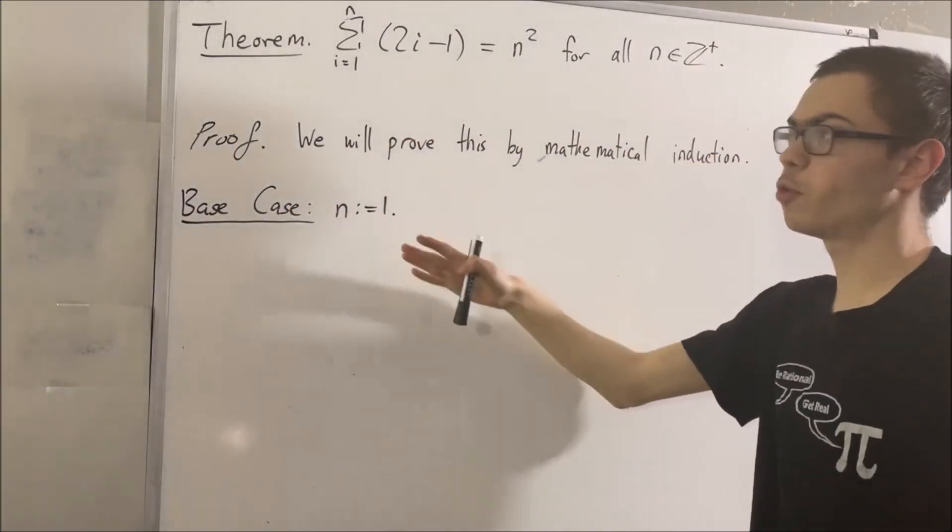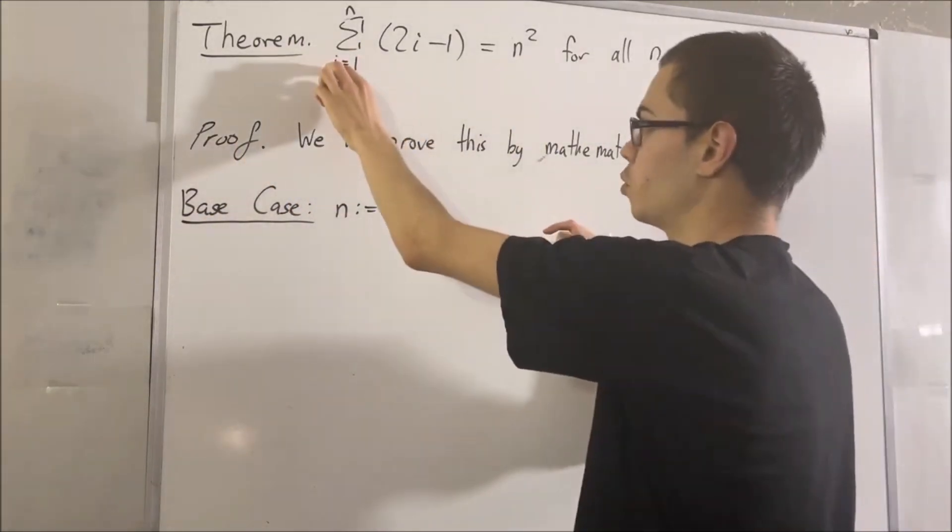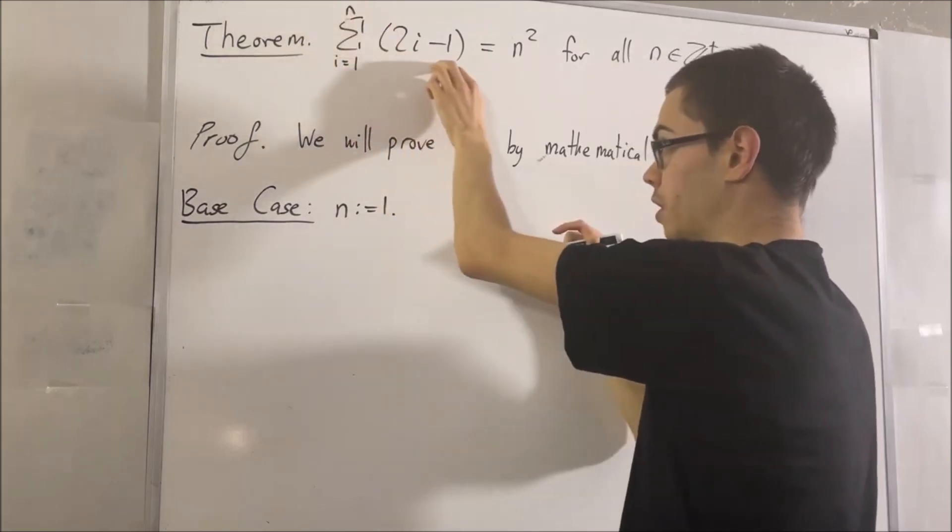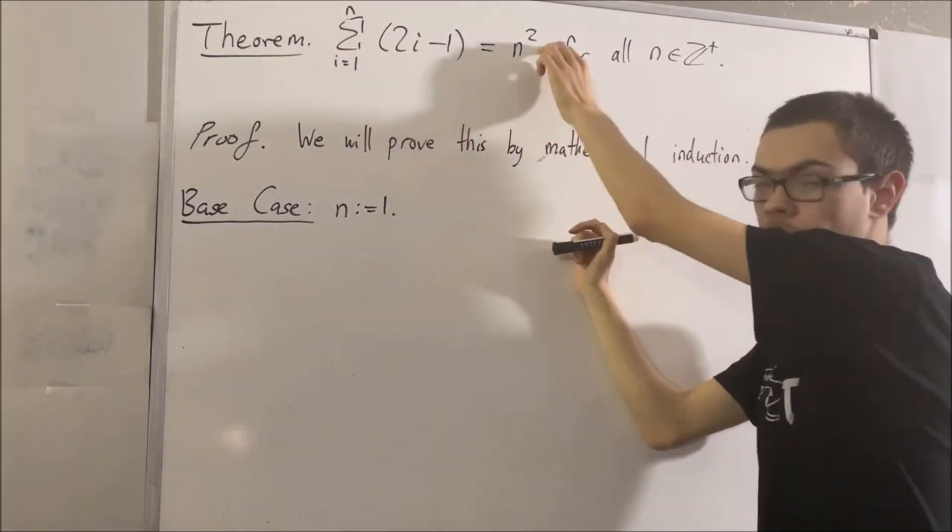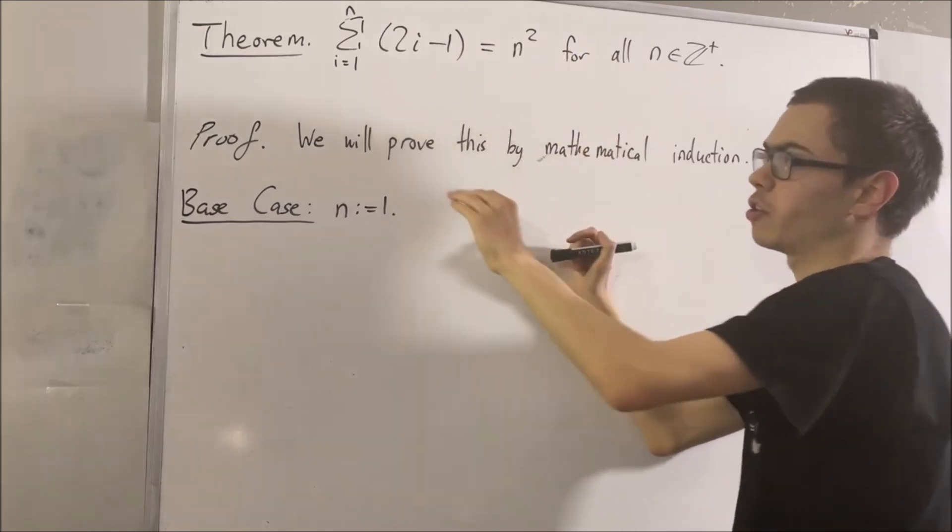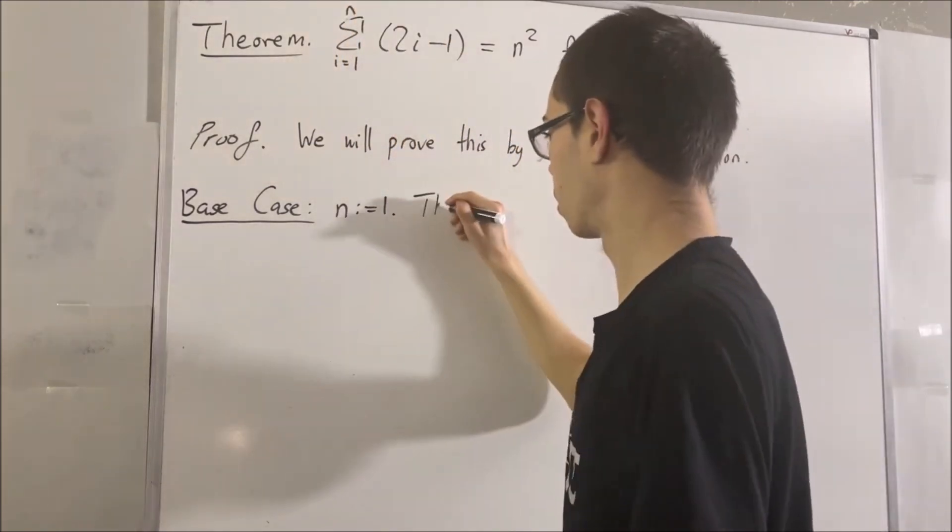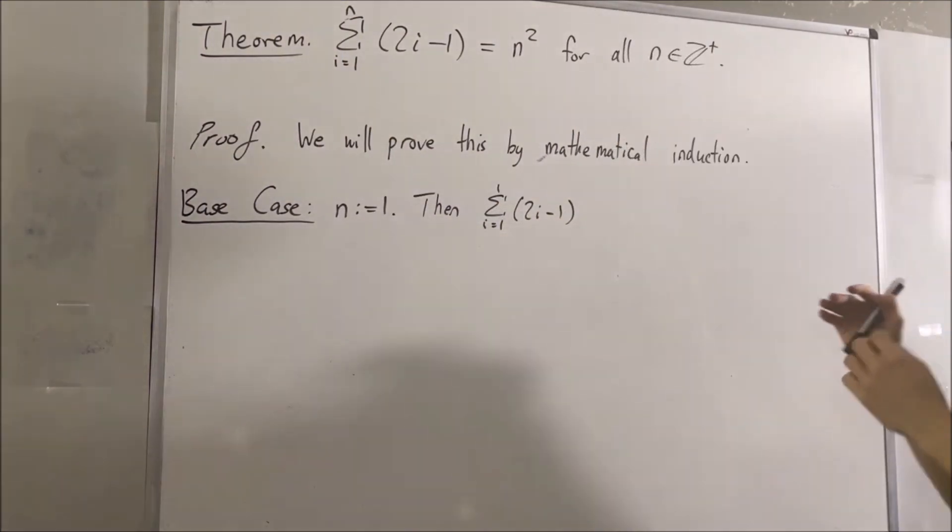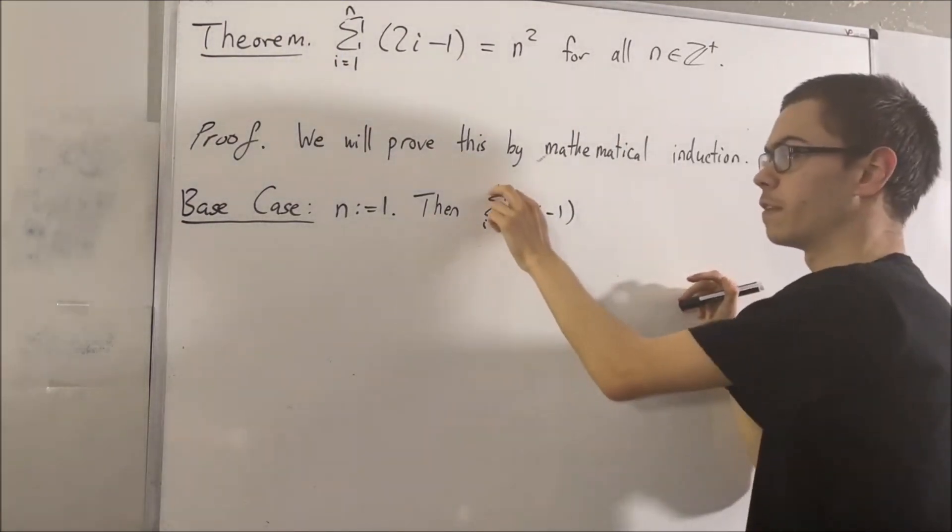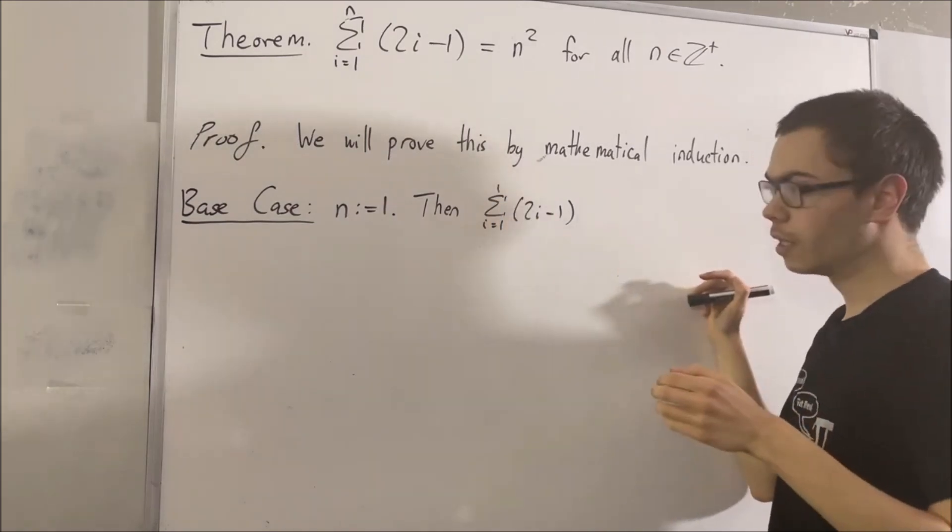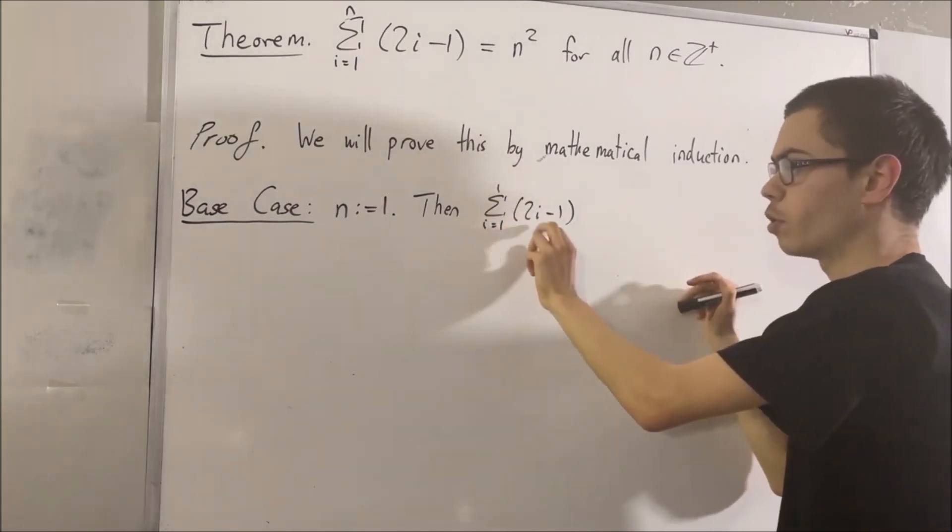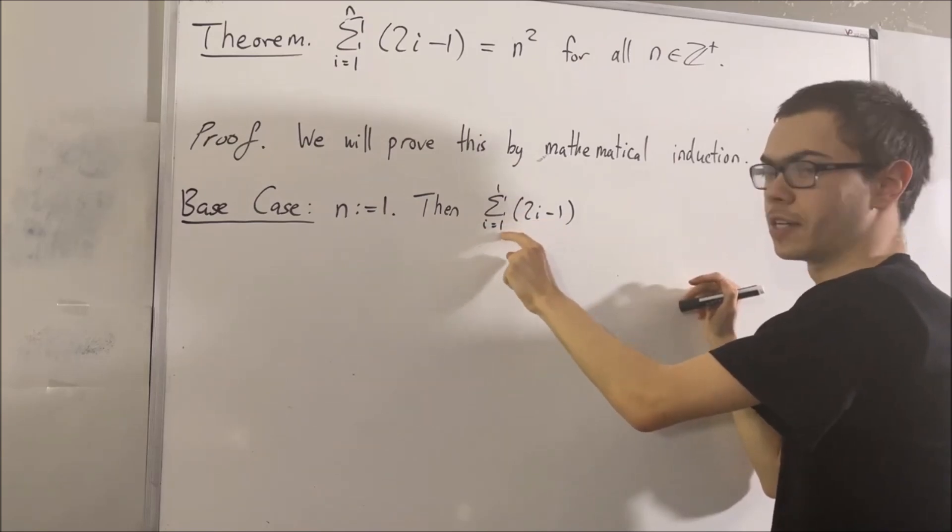So really, what we're trying to prove here is that the sum from i equals 1 to 1 of 2i minus 1 is equal to 1 squared. So let's start out by writing the left-hand side where n is equal to 1. Now, if we recall, when the lower and upper bounds of a summation are equal, then all we do is we replace i with that number.